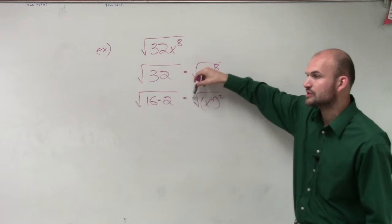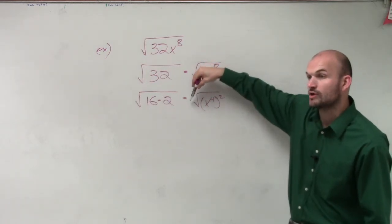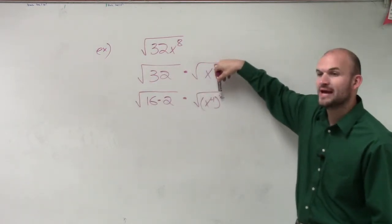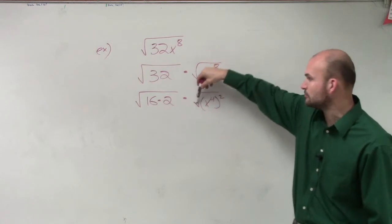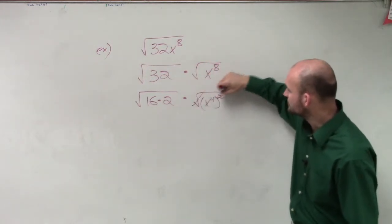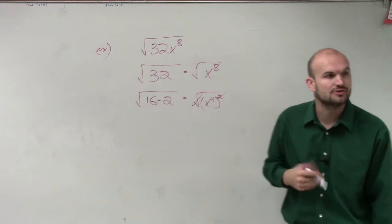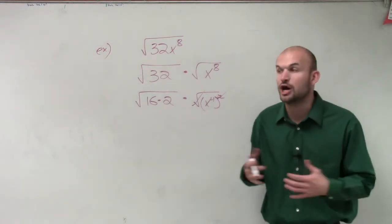But the important thing is, remember, we want to use our inverse operation. Since I'm taking the square root, I want to make sure my exponent is to the second power. You want the roots and the powers to be the same, because what they're going to do is inverse, or use the opposite operation of each other, so they're going to undo each other.